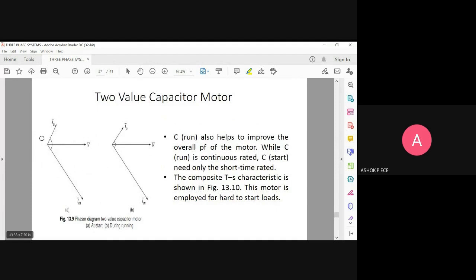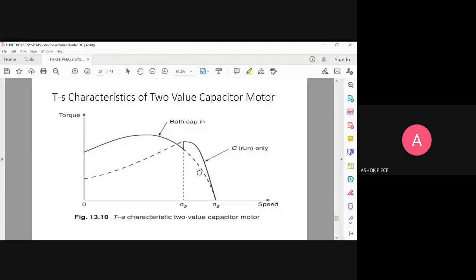Now looking at the torque-slip characteristics. See here, this is for your two-value capacitor. When both capacitors are added, the torque will increase and then decrease. But during start you will have one capacitor. This will be running when—this point is the point at which the capacitor is switched over.